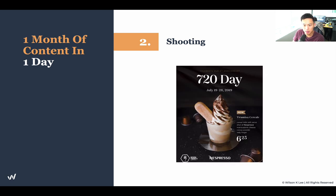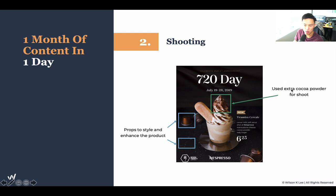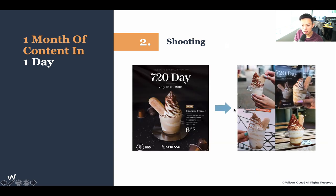As you can see here, we have props to style, enhance, and elevate the product. We also used extra cocoa powder for the shoot to enhance this picture and make it more coffee-ish. We also took three tries to get this perfect swirl. Take your time to create products that look good for your shoot. Our styled shot right here is not too different from the real product, so it really matches people's expectations. We actually changed our recipe to include more coffee powders, so you can see they're very, very alike.